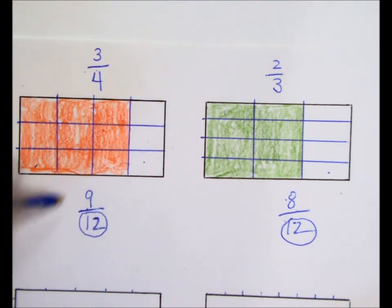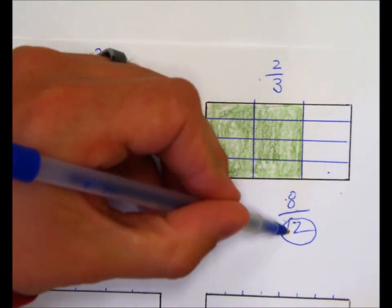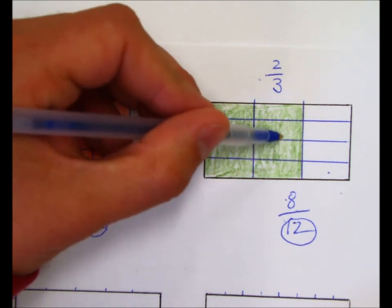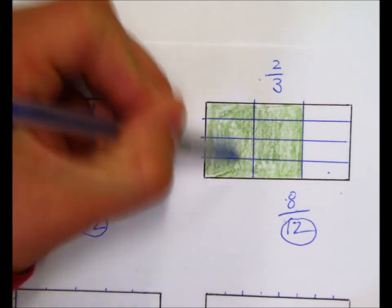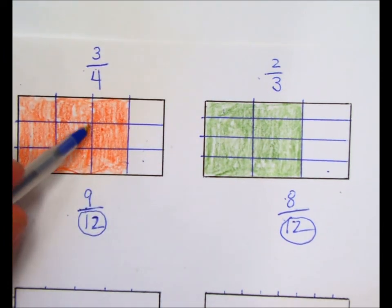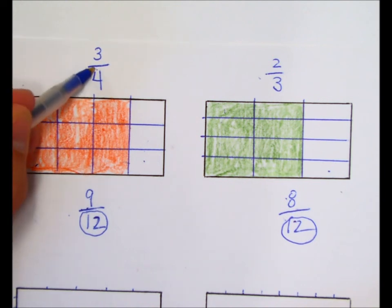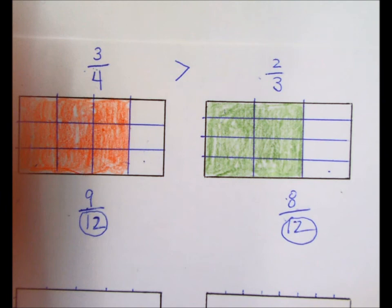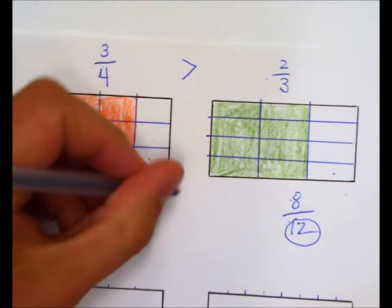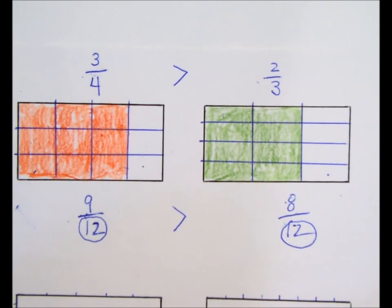So, 3/4 is equivalent to 9/12. 2/3 is equivalent to 8/12. We've proven that by dividing our original rectangle once more, and now we have 12 equally sized pieces in each rectangle. So, we can say with certainty and being able to prove it, that 3/4 is actually bigger than or greater than 2/3. We've done that because we know that 9/12, 9 pieces out of 12, is more than 8 pieces out of 12.